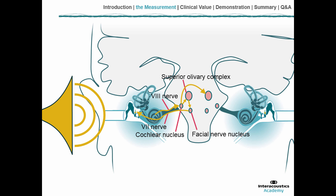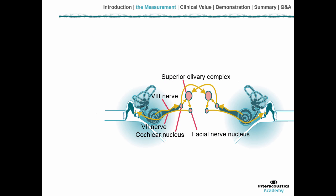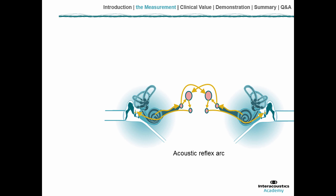Also, from the cochlear nucleus, there is a branch going to the other side, to the superior olivary complex of the opposite side. From there, the opposite side also gets activated so that the acoustic reflex takes place in both ears simultaneously. All together, this complete pathway involved in acoustic reflex measurements is called the acoustic reflex arc.